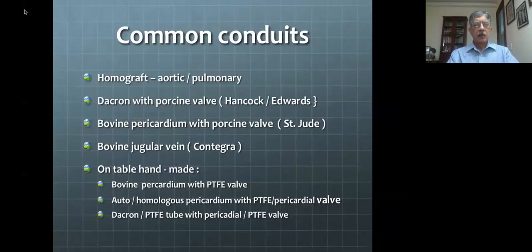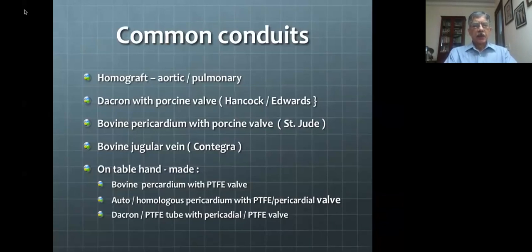Currently, one of the more commonly used conduits is the Contegra conduit. The Contegra conduit is essentially the jugular vein harvested from a cow, which is fairly sizable and comes in varying sizes starting from roughly 12 millimeters in diameter up to 22 millimeters. The jugular venous valve that exists naturally then serves the function of the pulmonary valve.